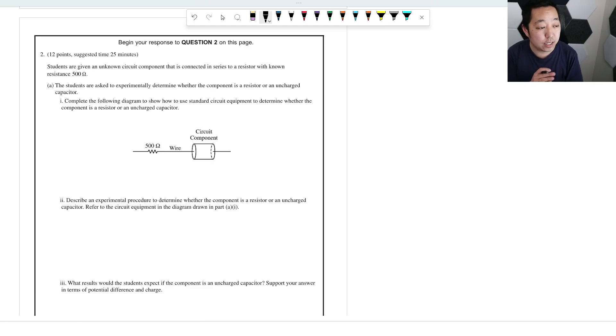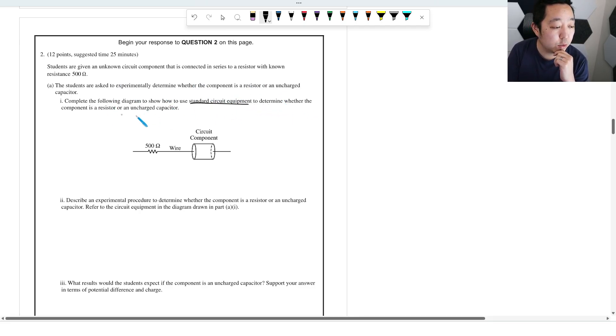Alright, let's take a look at the second FRQ from 2023 AP Physics 2 exam. Solutions aren't going to be out till later, so these are my best stab at a solution. If I have any corrections, I will put it as a pinned comment below. So students are asked to experimentally determine whether a component is a resistor or uncharged capacitor. Complete the following diagram to show how to use standard circuit equipment to determine whether a component is a resistor or uncharged capacitor.